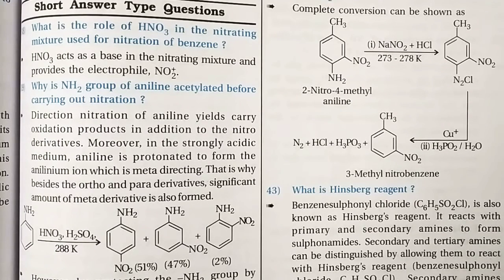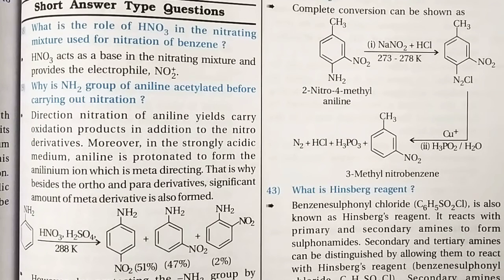Acetylation of aniline gives acetanilide. Bromination of acetanilide with bromine, followed by acid hydrolysis, gives parabromoaniline as the major product. Similarly, reaction with concentrated HNO3 and concentrated H2SO4 followed by acid hydrolysis gives paranitroaniline as the major product.